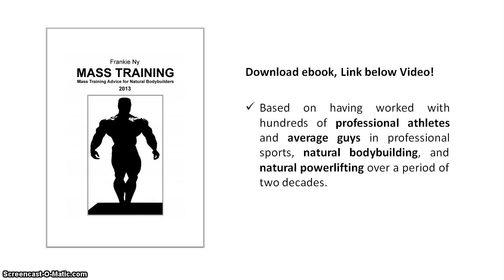The most basic, generic, and common form of weight training progression works like this: first, meet the prescribed sets and rep goal for the exercise. Second, increase the weight being lifted by the smallest increment possible. Third, meet the set and rep goal again with this new slightly heavier weight. Fourth, increase the weight again by the smallest increment possible. Fifth, repeat this process over and over again as often as you are capable of making it happen.